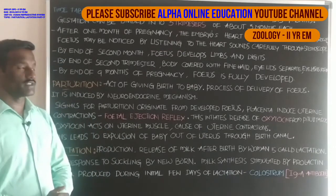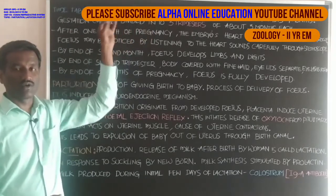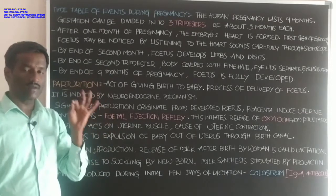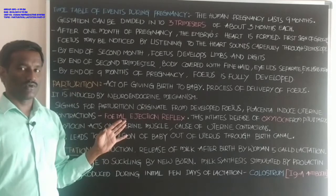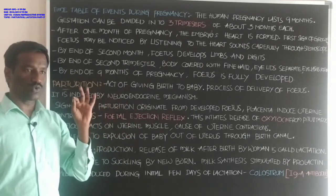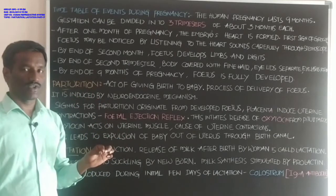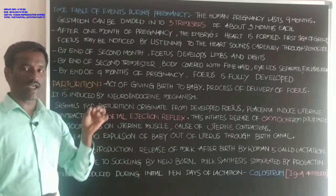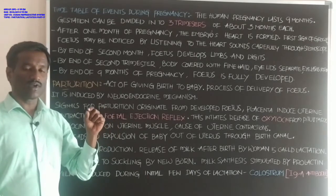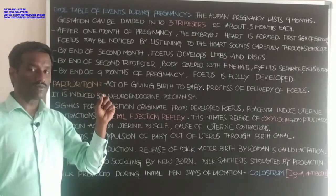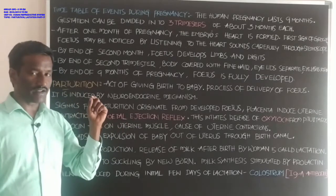Students, let us discuss the timetable of events during pregnancy. In human beings, the pregnancy period is about 280 days, that is 9 months and 10 days. It is also called the gestation period, defined as the time period between conception and the development of the growing baby.